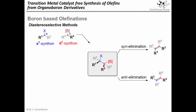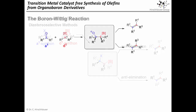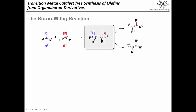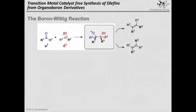Those precursors can be made diastereoselectively. For example, by adding a boron-stabilized carbanion to a classic aldehyde reagent. In many ways, this reaction is analogous to the Wittig reaction and is thus often called the boron-Wittig reaction. However, it is quite likely that in contrast to its famous namesake, the initial addition product is not an oxaboretane but rather an open structure. Understanding the diastereoselectivity of the initial addition is of key importance for correctly predicting the stereochemical outcome of the overall reaction.